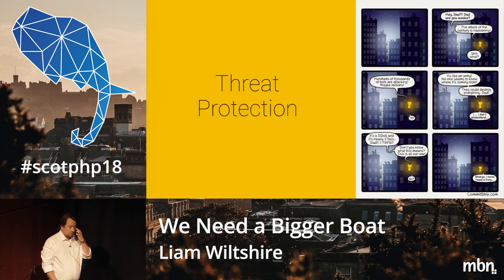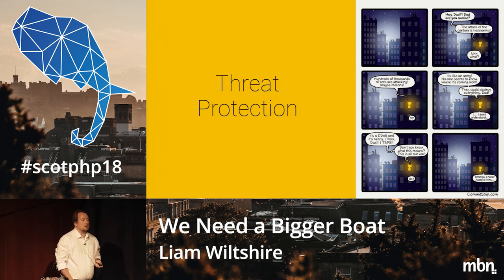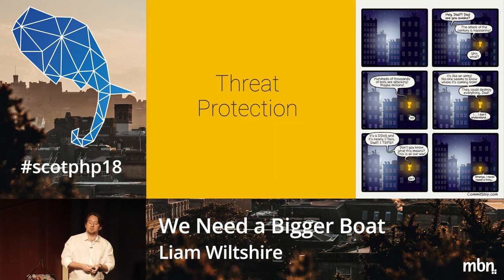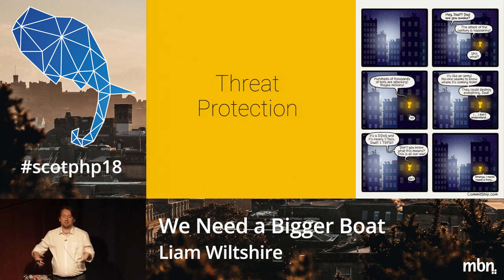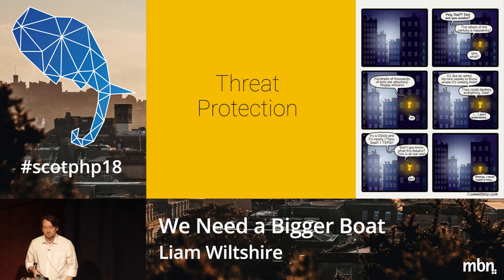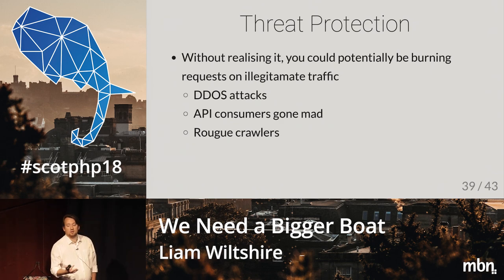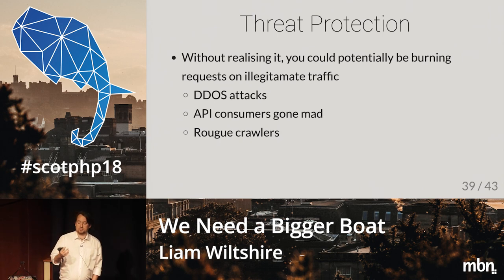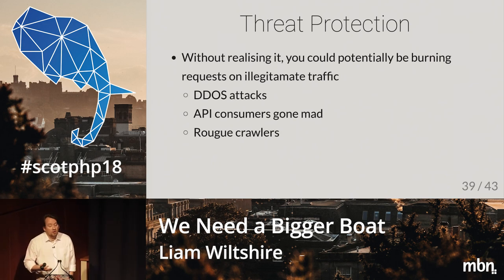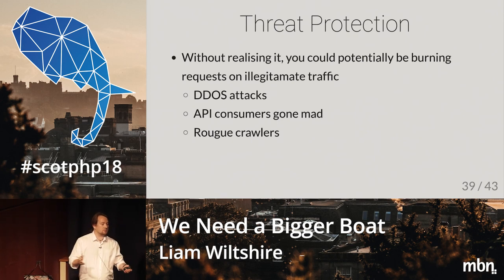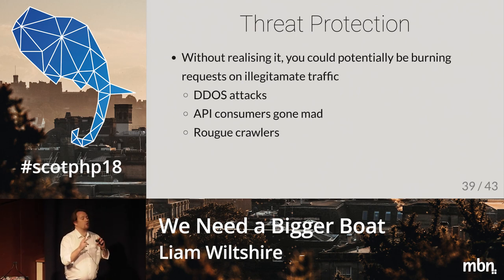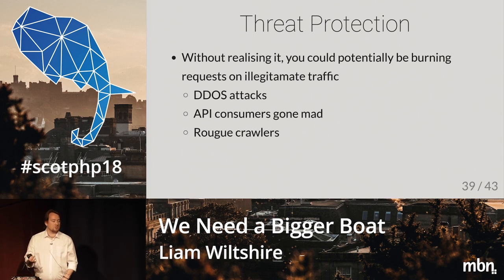Threat protection. As I mentioned at the beginning, we kind of always have people trying to knock us offline — it keeps life interesting. Anyone who's attacking your system, be that a DDoS or whatever else, is using your resources. They're making you have to scale further than you actually need to for legitimate requests. There are different things that can cause high rogue traffic: DDoS attacks, an API consumer doing something insane, or rogue web crawlers. There can be a lot of background noise — you might be serving 200 requests a minute, but 100 of those are rogue traffic. If you can get rid of that, you can halve the resources you need.